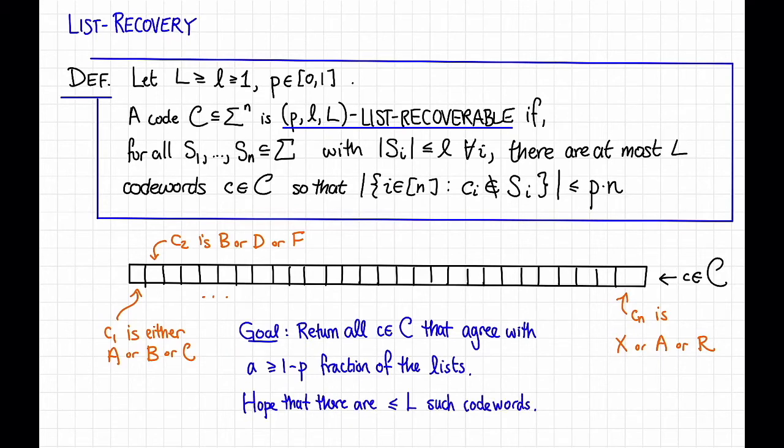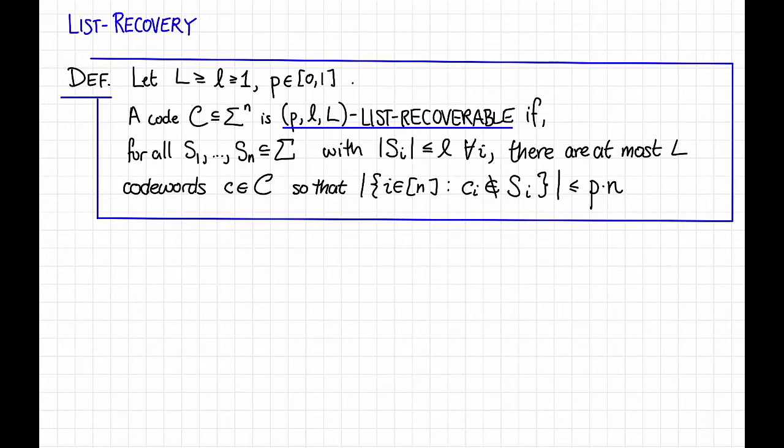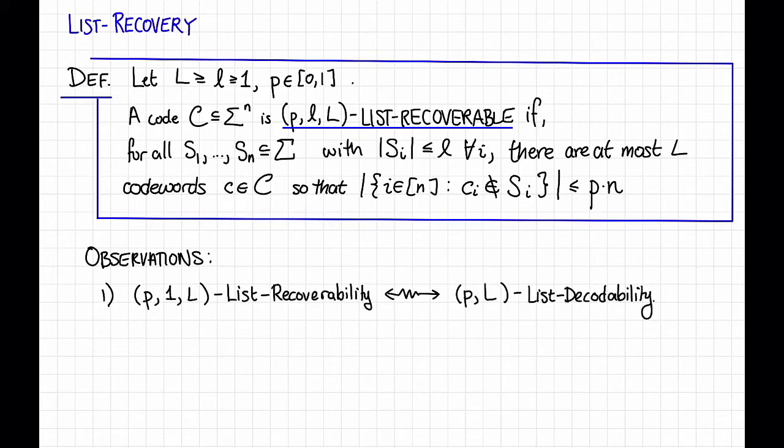Let's make a few observations about this definition. In order to have space, I'm going to erase the picture. So observations. The first observation is that list recovery generalizes list decodability. In particular, p comma 1 comma L list recovery is the same as p comma L list decodability. If this isn't immediately clear, pause the video now and stare at it until it is.